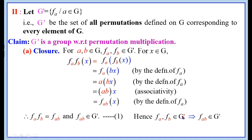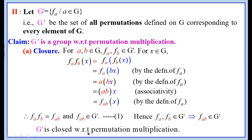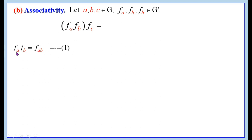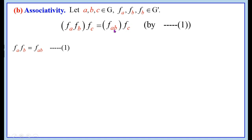For associativity, let A, B, C belong to G; their corresponding permutations F_A, F_B, F_C are in G'. Using the result F_A ∘ F_B equals F_{AB} (equation 1), we have (F_A ∘ F_B) ∘ F_C equals F_{AB} ∘ F_C equals F_{(AB)C}. Since A, B, C are elements of G and associative law holds in G, (AB)C equals A(BC), therefore F_{(AB)C} equals F_{A(BC)}.